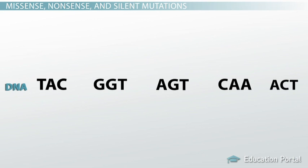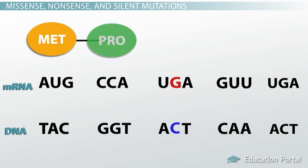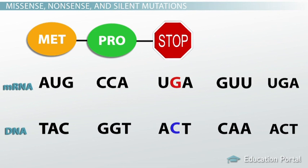Let's start over and try a different base substitution — we'll switch out this G for a C. The resulting mRNA will be changed by one letter. From our codon chart, AUG codes for methionine, CCA codes for proline, and then UGA codes for — wait, that's a stop codon! So we don't even get to keep building; we have to stop short, and now the magic keratin won't be produced at all.